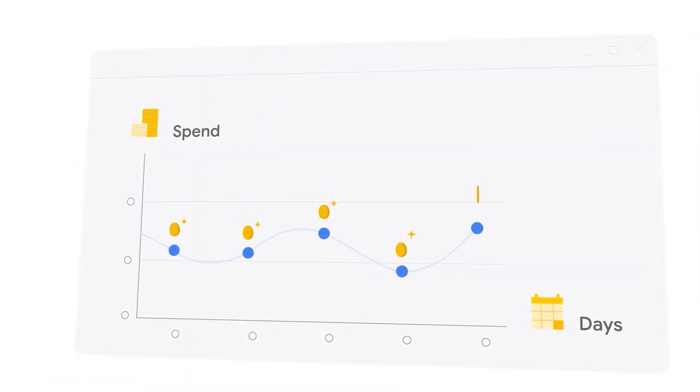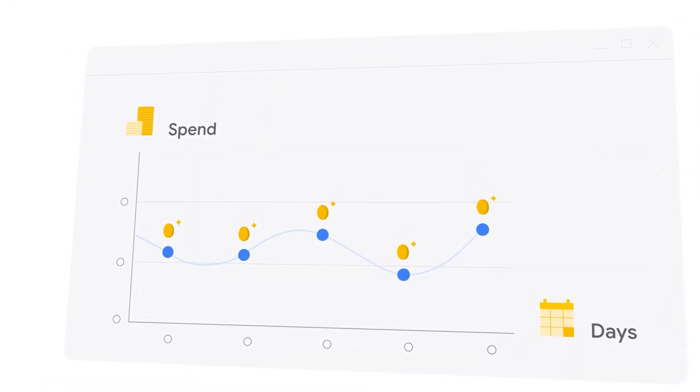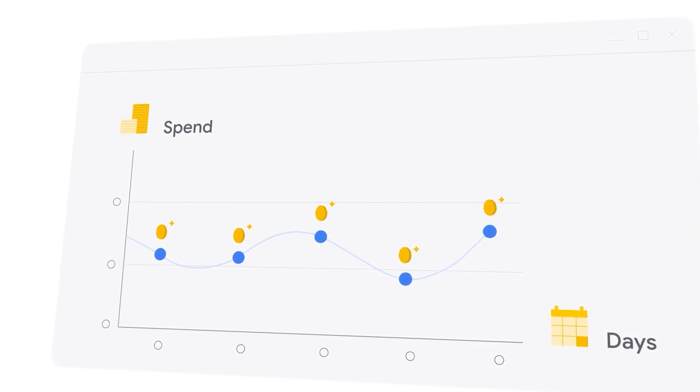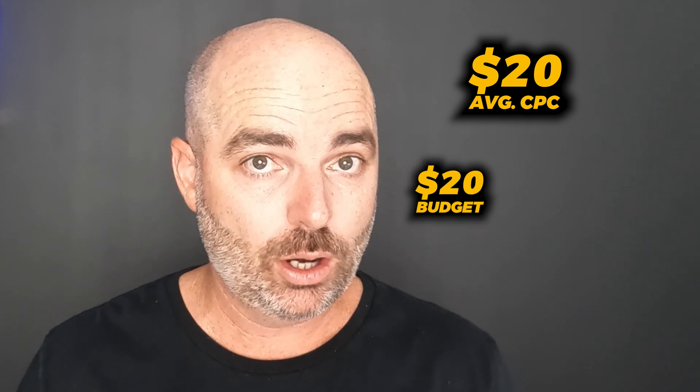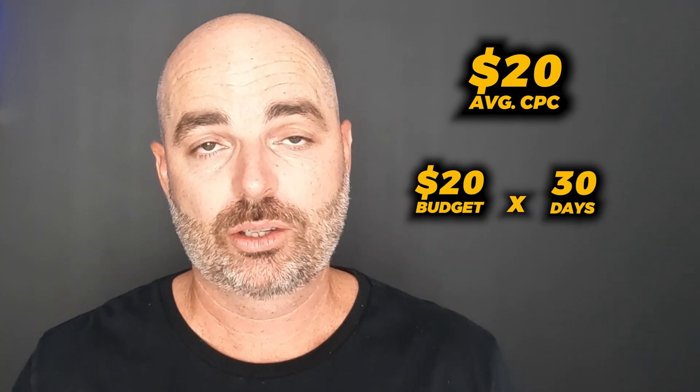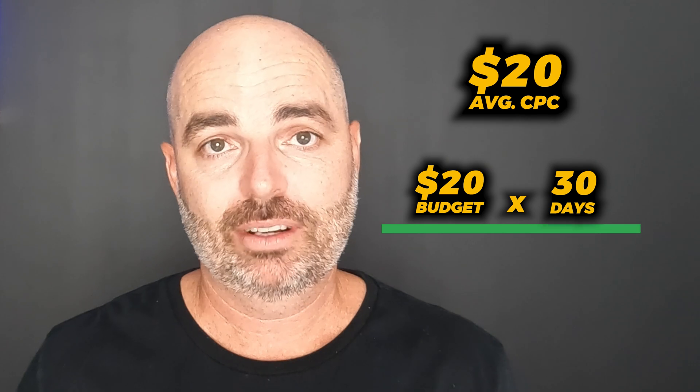Secondly, you need to set a budget that can achieve at least 30 conversions. So if your average cost per conversion is $20, you need a daily budget of at least $20, which means a minimum of $600 a month. If you don't have those conditions in place, it may be better to persist with Search or Shopping before you move into Performance Max.